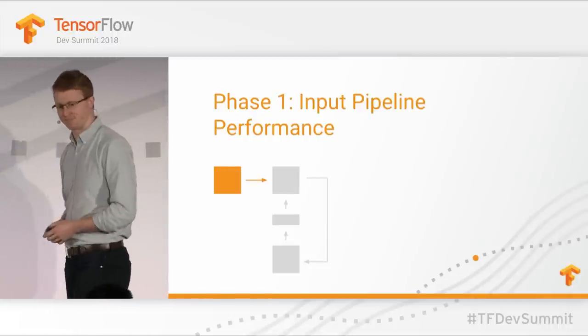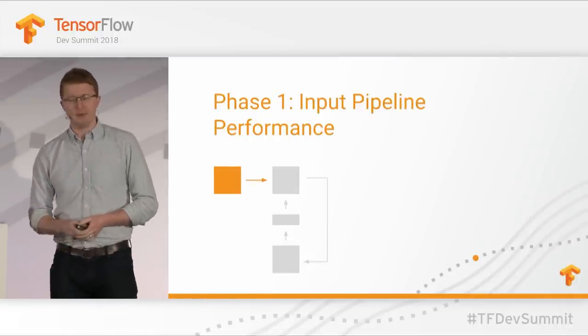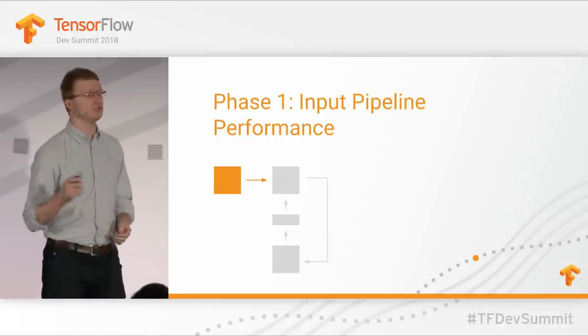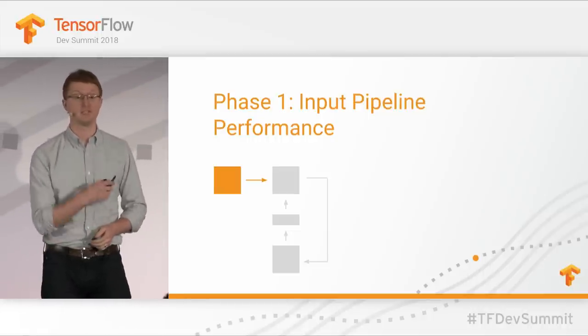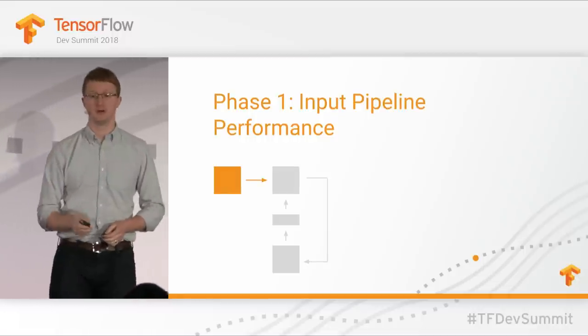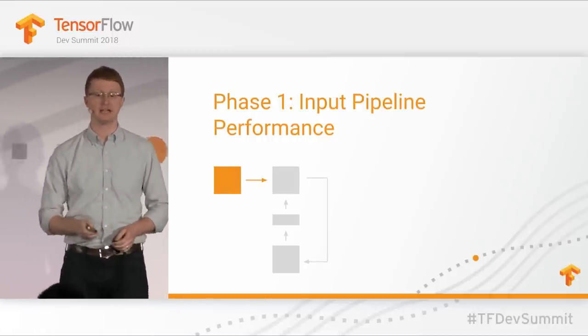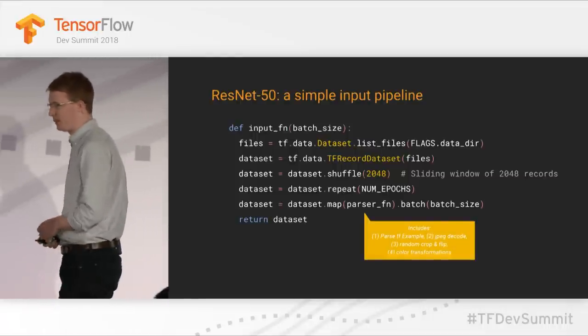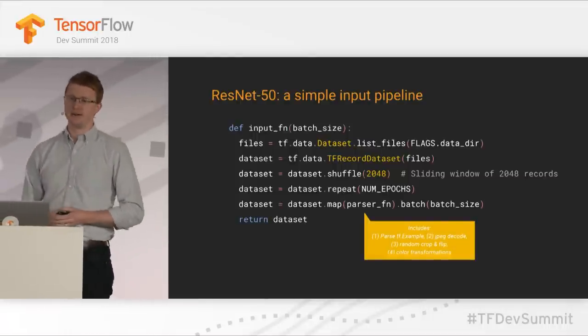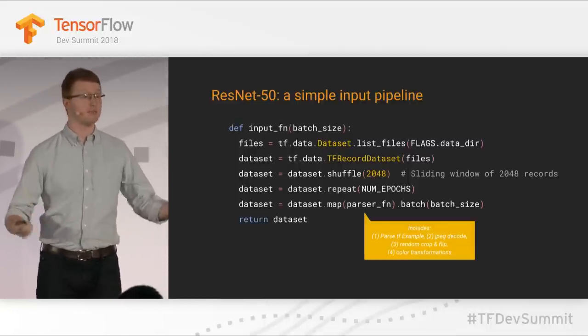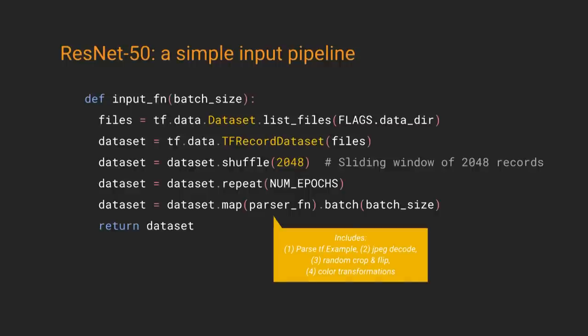In my experience, as people migrate to modern accelerators — new TPUs, new generations of GPUs — phase one is actually where the most performance problems are. There's always a problem with phase one. So we're going to spend time digging into input pipelines. tf.data is definitely the far-and-away recommended API for loading data into TensorFlow. For a simple image model like ResNet-50, your input pipeline will probably start off looking something like this.